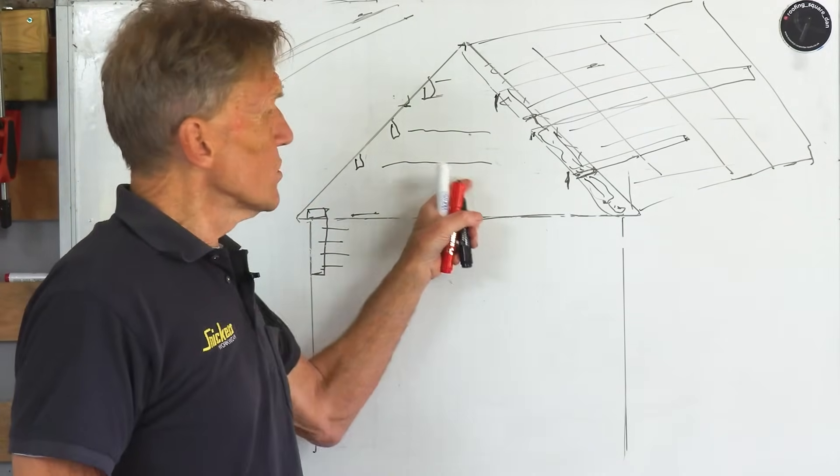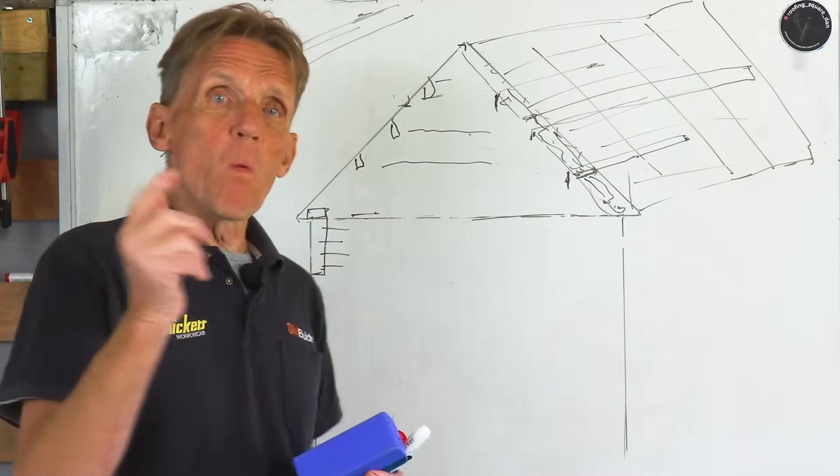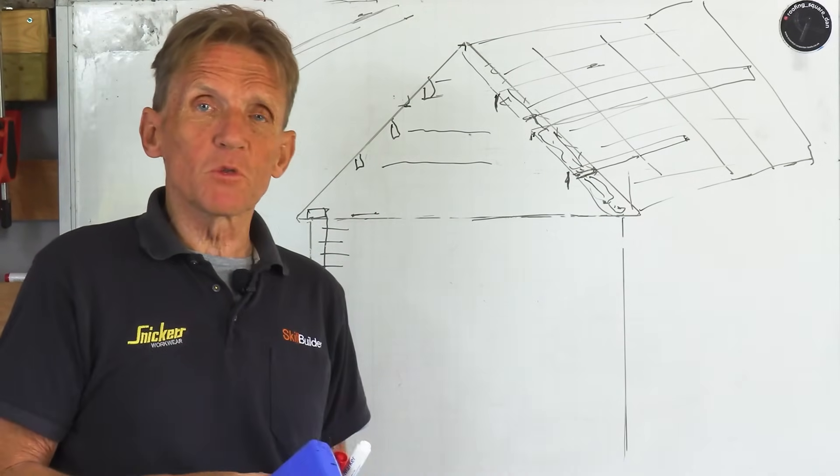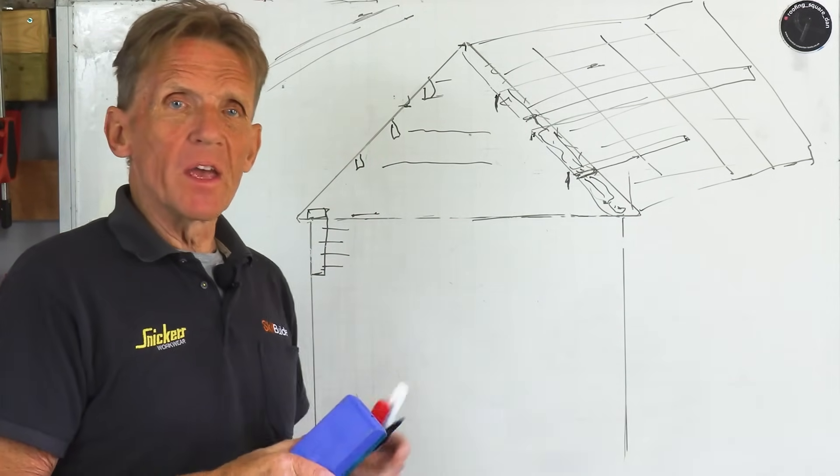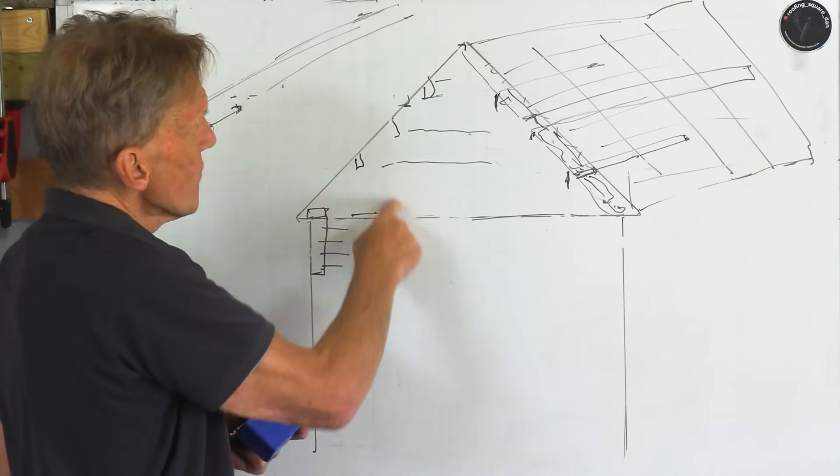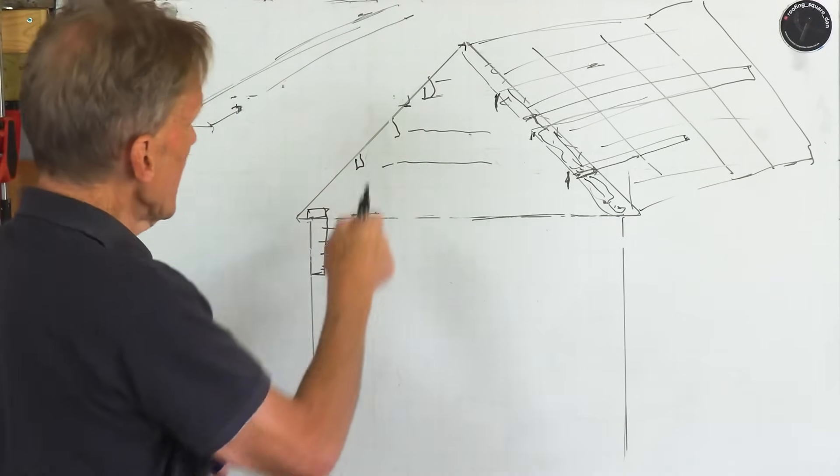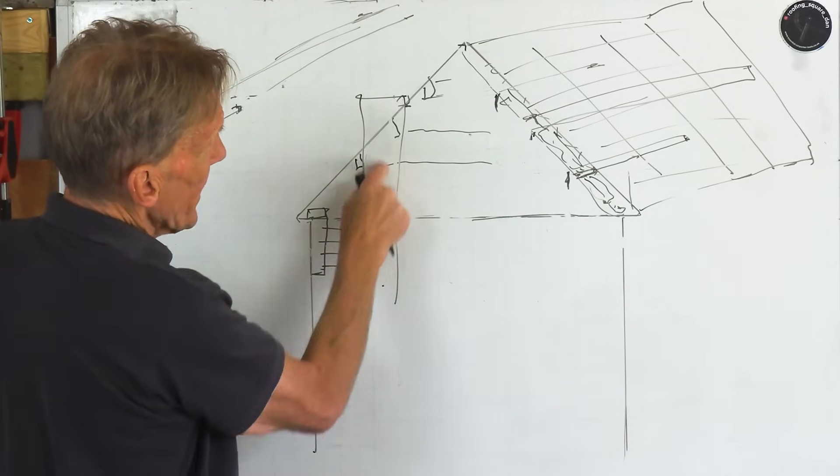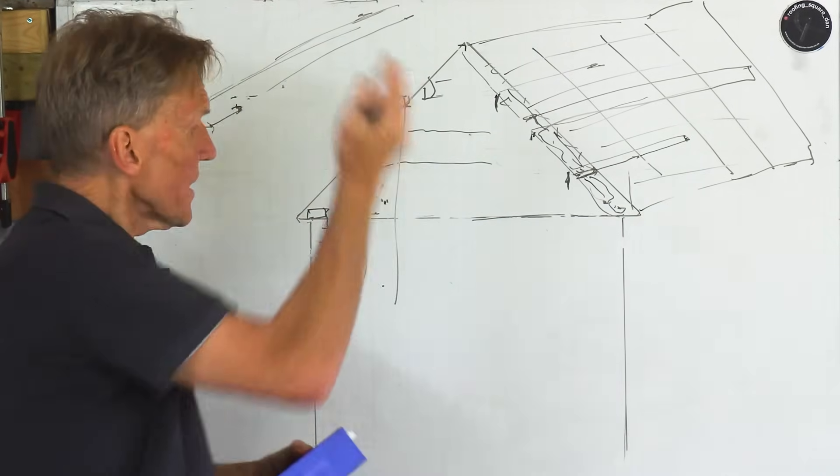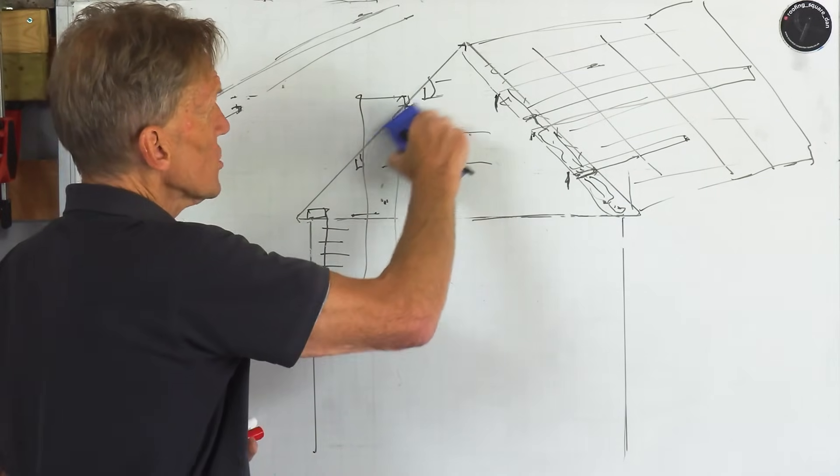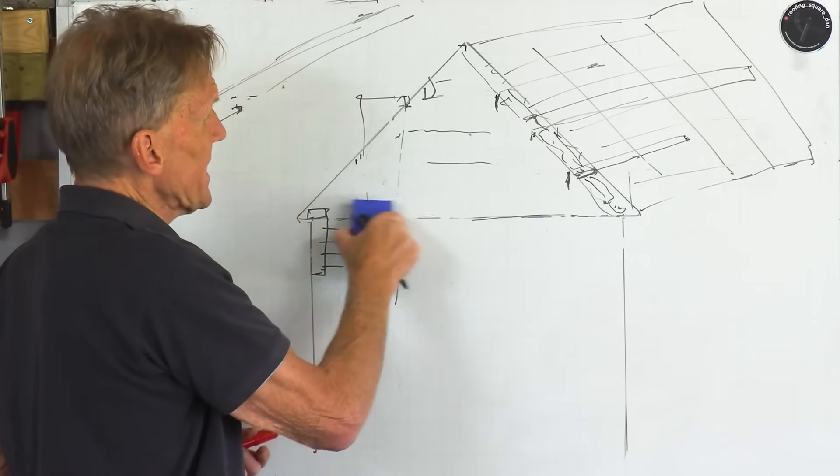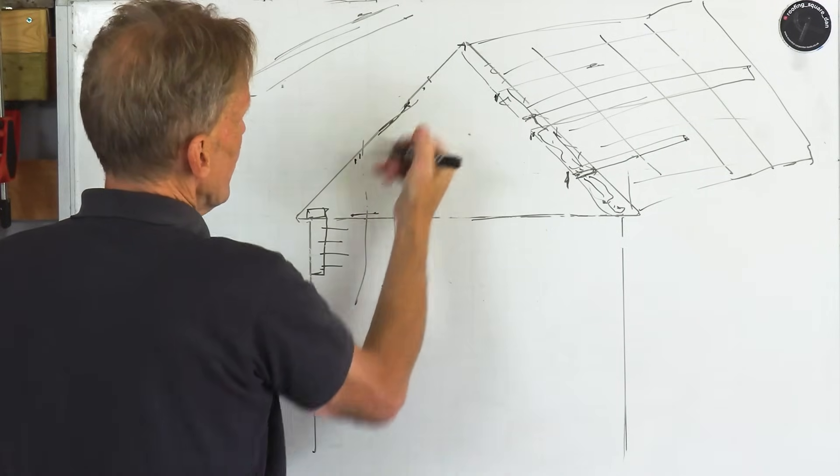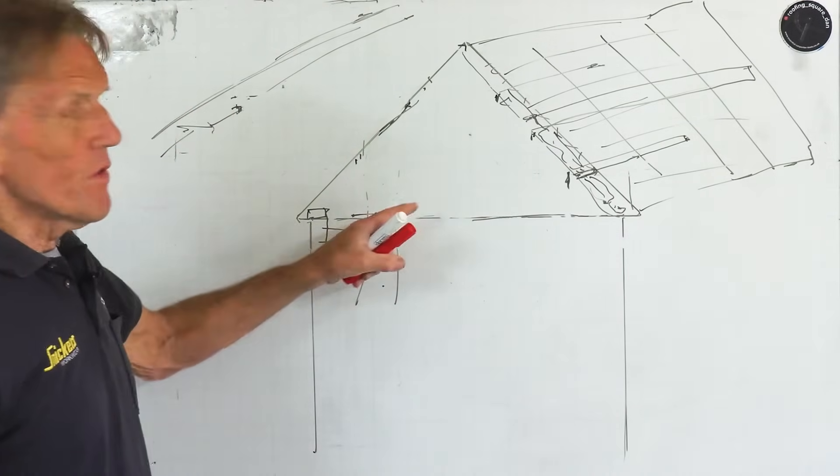Another thing that ties gable end walls in very nicely is having a wall in the middle of them. When people start taking out internal walls, removing chimney breasts, you might have had a chimney going all the way up here that was stabilizing that gable end to a certain extent. You take that away, then suddenly you've got a structure which is lacking lateral restraint.